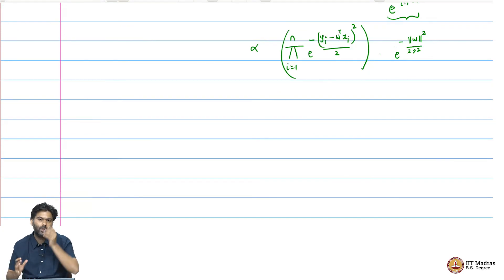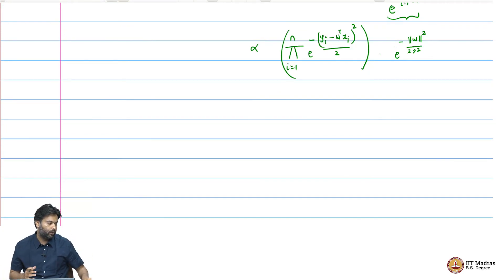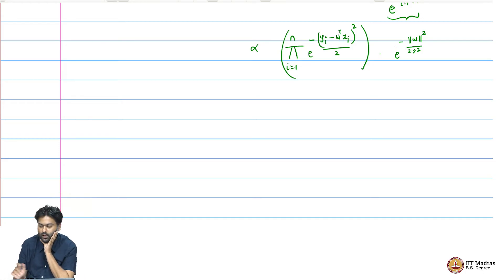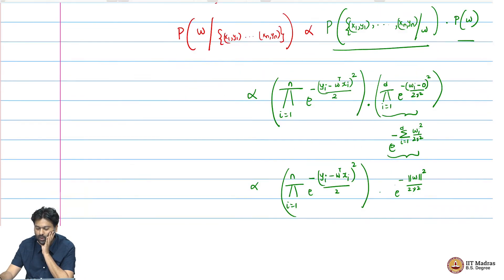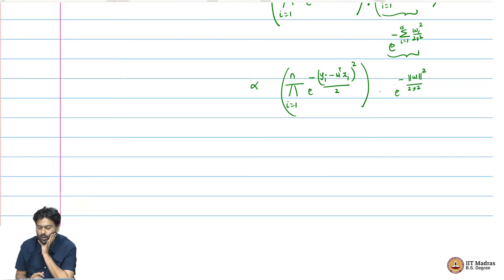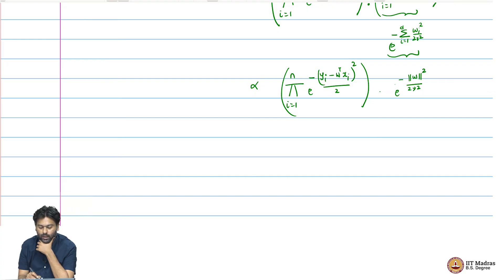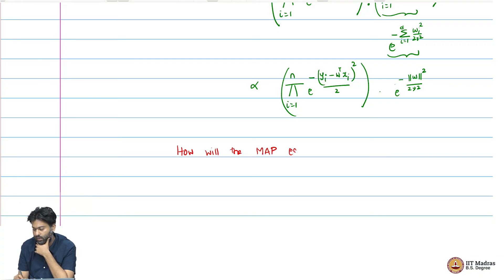So this is our posterior form — this is how our posterior is going to look like. Of course, there are going to be constants which will ensure it is a proper density, but the posterior is proportional to this. Which means if we want to look at the maximum a posteriori estimate — the MAP estimate — we can ask how that is going to look.